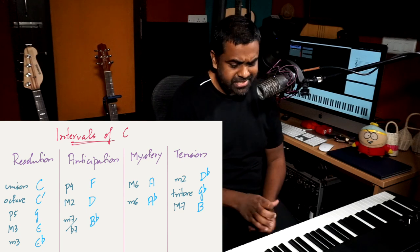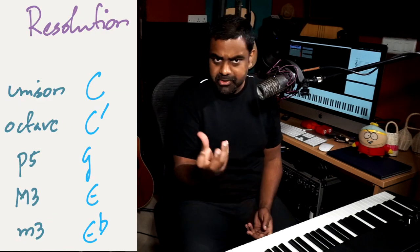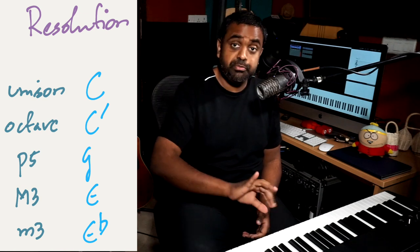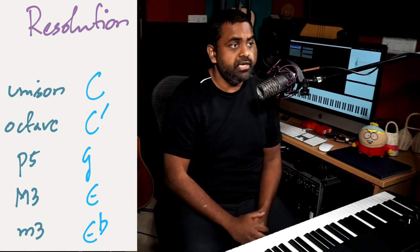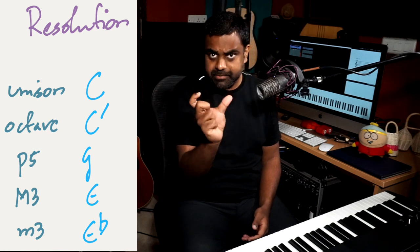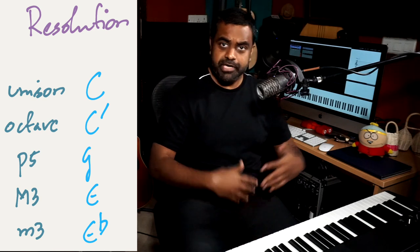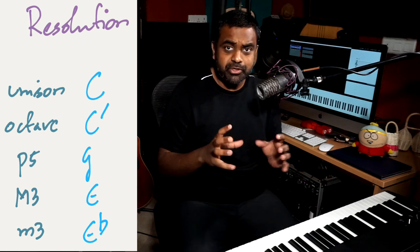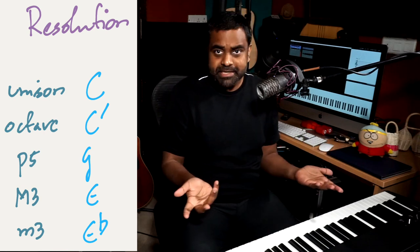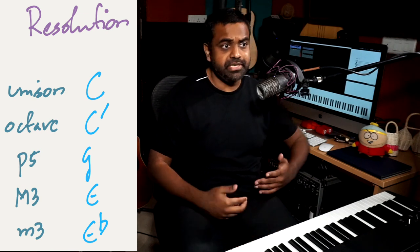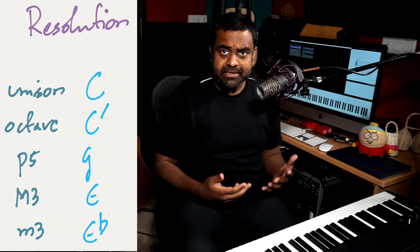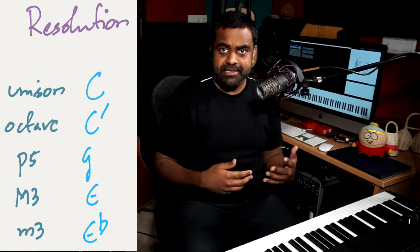The resolutions are: the unison, which is just the same note; the octave, which is the same note played higher or lower; the perfect fifth, which is the fifth note in a major or minor scale; and the two emotion-giving thirds. The major third conveys a more positive, uplifting, or happy emotion, while the minor third portrays a more melancholic, serious, or sad emotion. Let's look at the note C.